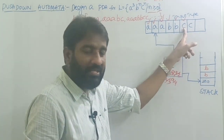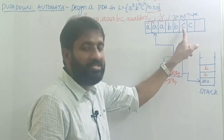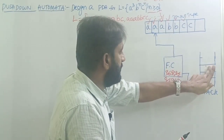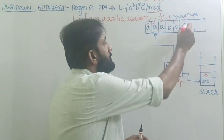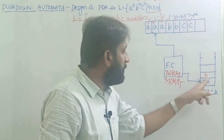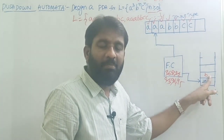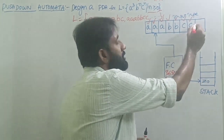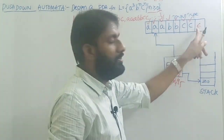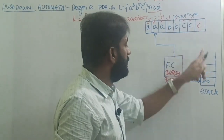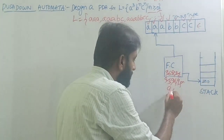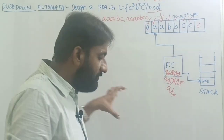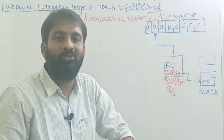So the input symbol is C, pop B from the stack by changing to the new state Q5. Then the next input symbol is also C, and the top of the stack is B — map C with B and pop B from the stack. When there is no more input (epsilon) and the top of the stack is Z-naught, move to the final state and halt. This is the logic. I will now first write the transitions, then draw the graphical notation.